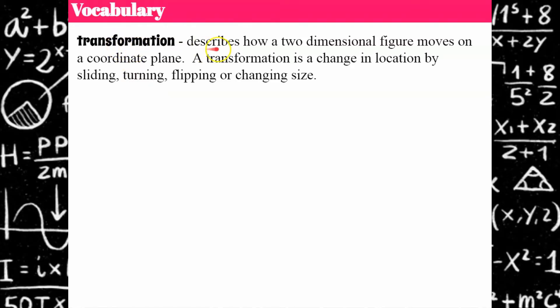A transformation describes how a two-dimensional figure moves on a coordinate plane. A two-dimensional figure is a triangle, rectangle, square, parallelogram, trapezoid — all of those that have length and width.